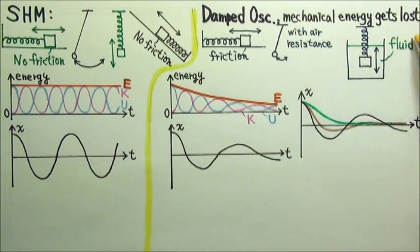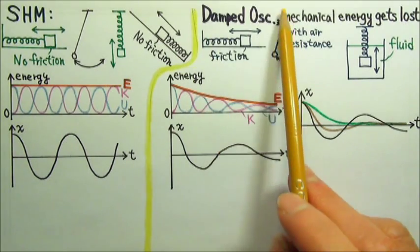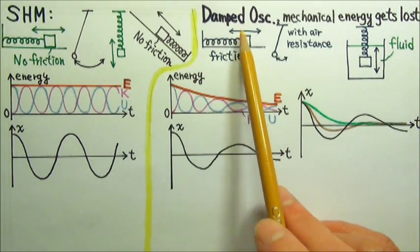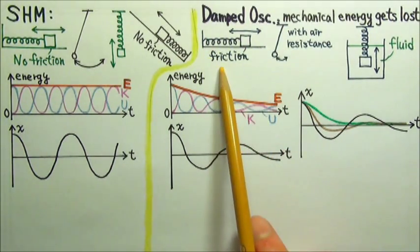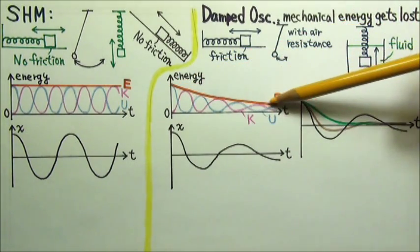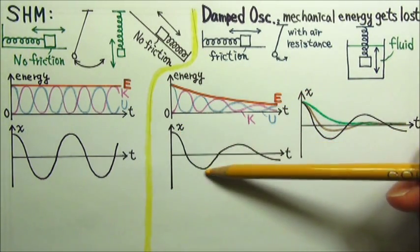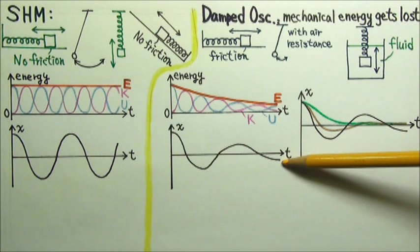When an oscillator loses mechanical energy, we call its motion damped oscillation. For example, if there is some friction or air resistance, the total mechanical energy would decrease as time goes on. This means that the amplitude of the oscillation would decrease as well.